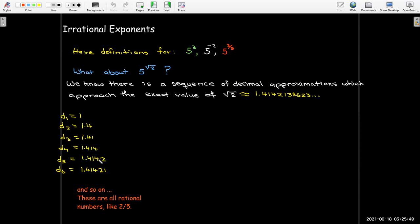Each one of these are rational numbers. I could write it as a fraction, and then I would have a definition of what it means to have a fractional exponent. If I took 5 raised to 1.4142, I know what that means. So for all of these, I have a definition for that. What I'm going to do is say since the limit of this sequence is radical 2, I'm going to define 5 to the radical 2 as the limit, as n goes to infinity, of the decimal approximations of radical 2.